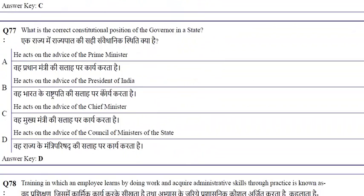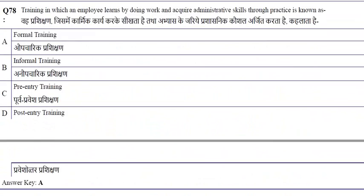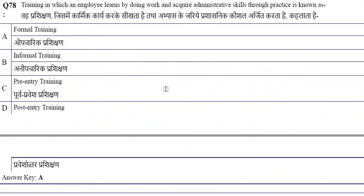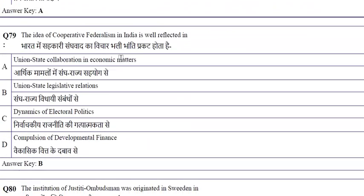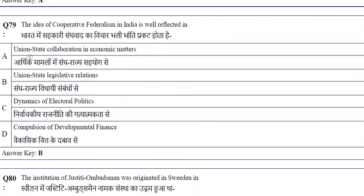Regarding constitutional provisions of the governor: he acts on the advice of the Council of Ministers of the state. Training in which an employee learns by doing work and acquires administrative skills through practice is known as formal training.